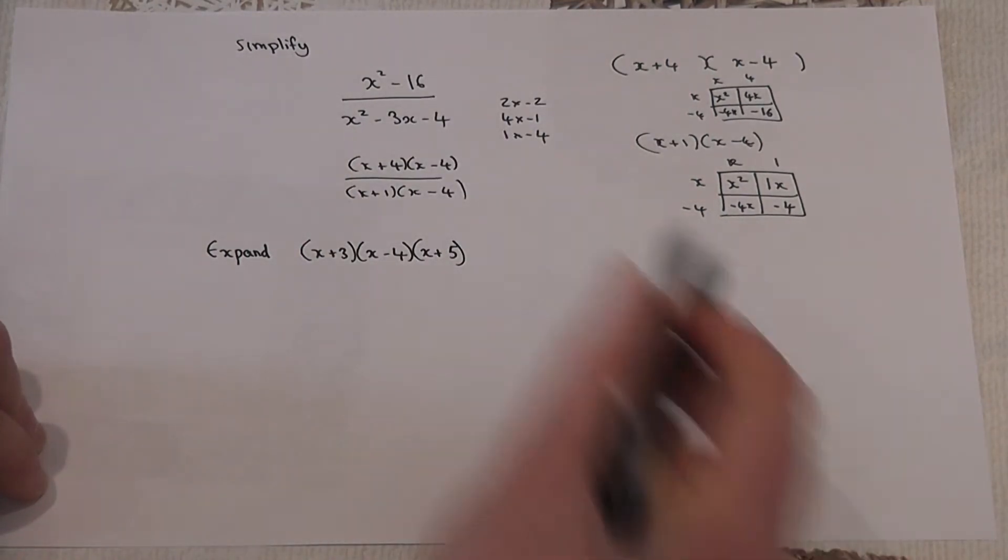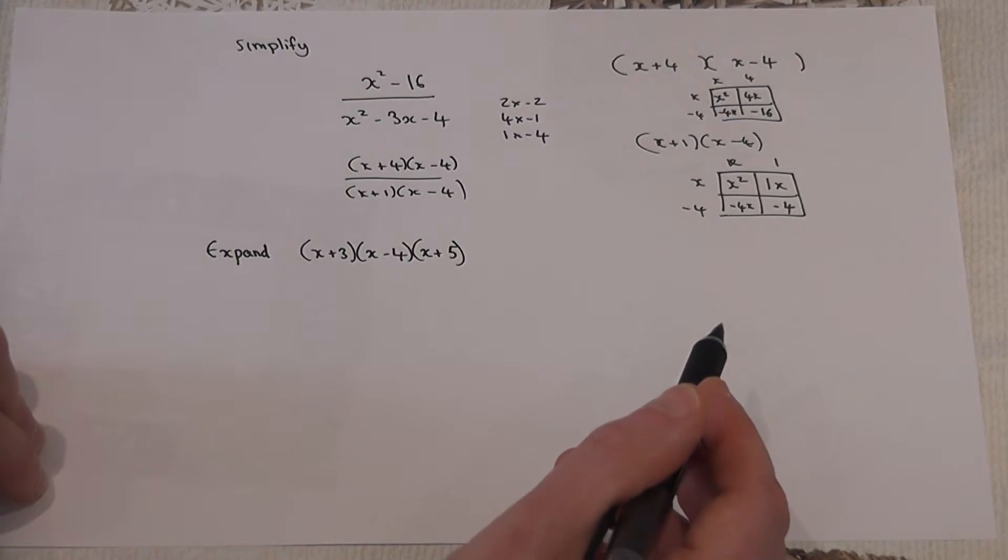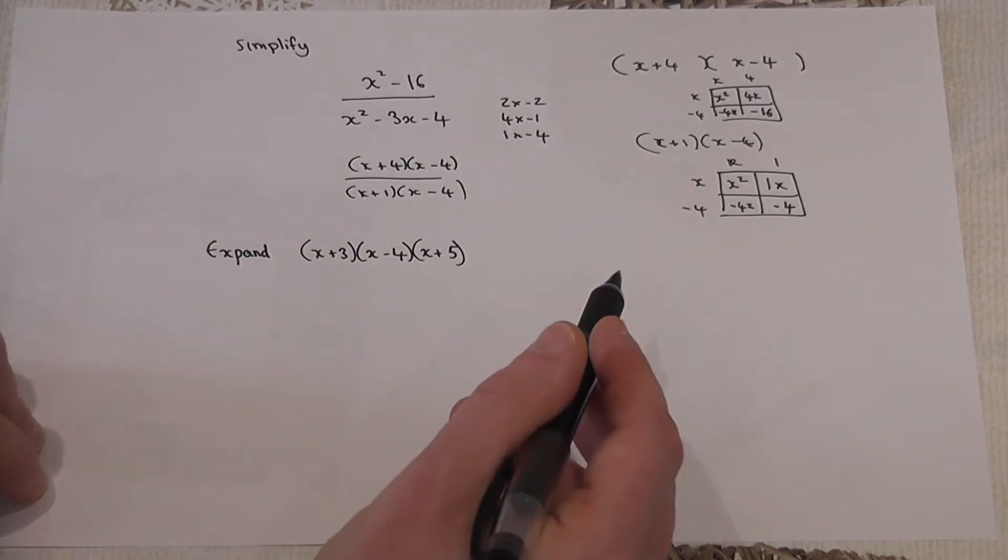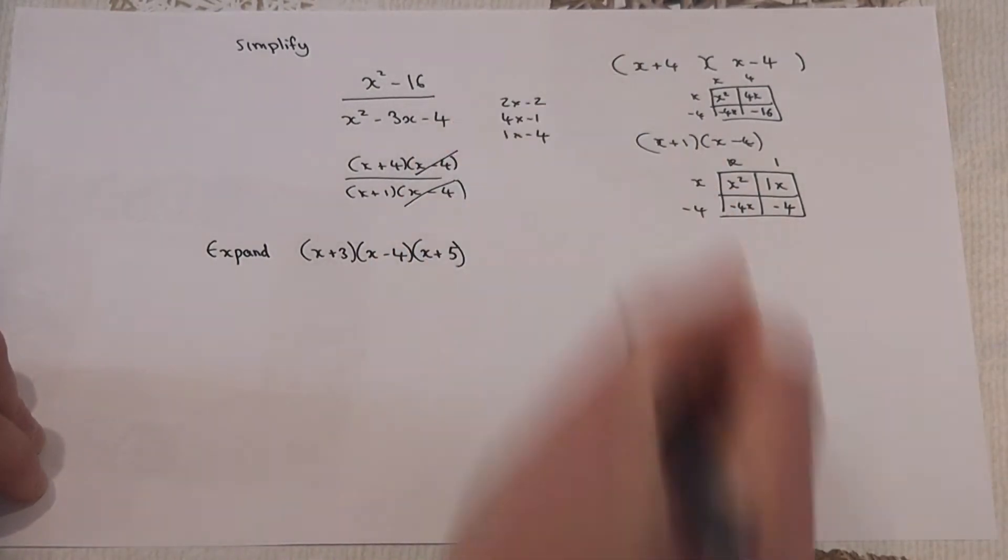What you then do is you then look at the top and the bottom, and we cancel off the things that are the same, the factors which are the same, which is x minus 4 and x minus 4. These cancel off.